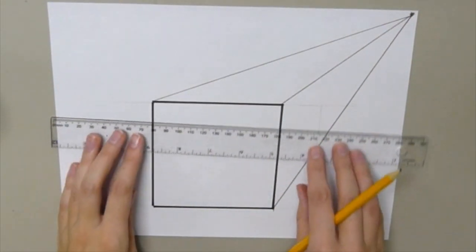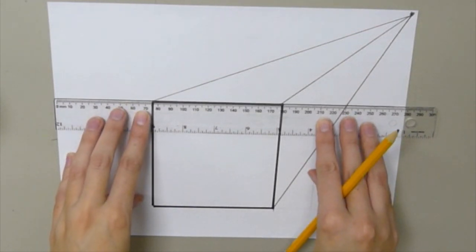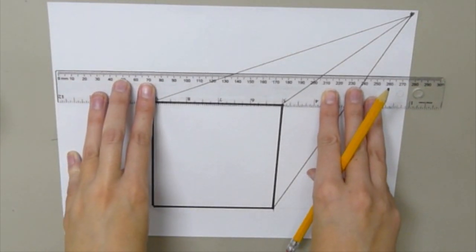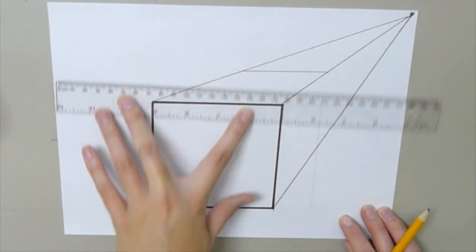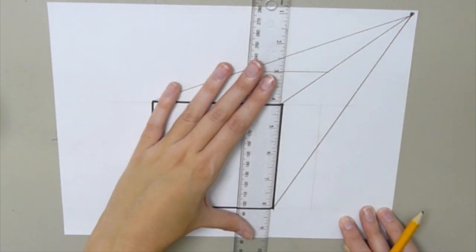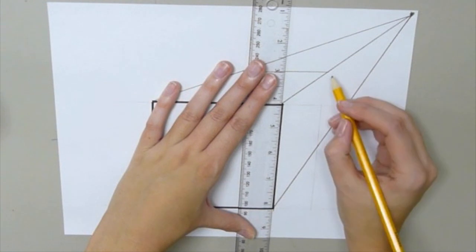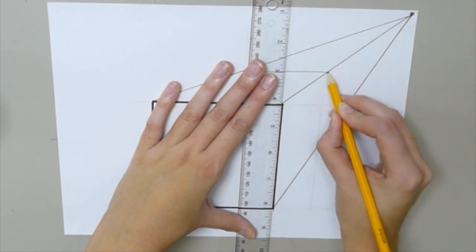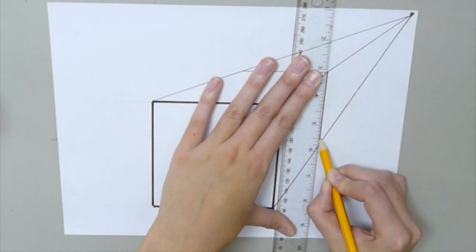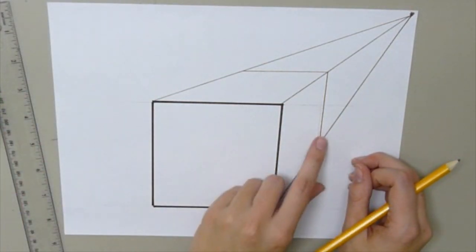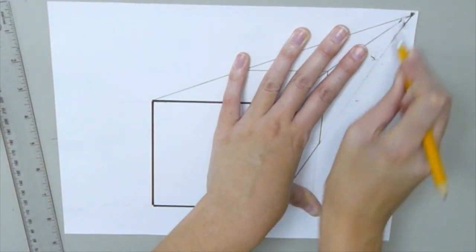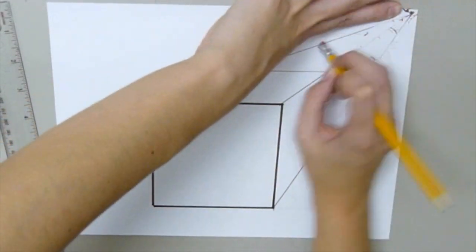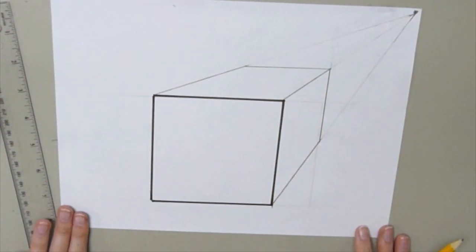Next, we're going to take our ruler, line it up to the top of our square, and slowly move the ruler up. I'm going to draw a line from the first line to the second line. Then I'm going to swing my ruler to make it vertical, line it up to the edge of my cube. I'm going to take my pencil and stick it at the corner, slide my ruler over, and go down. I'm going to erase the lines that go to my vanishing point. And it actually looks like a cube.